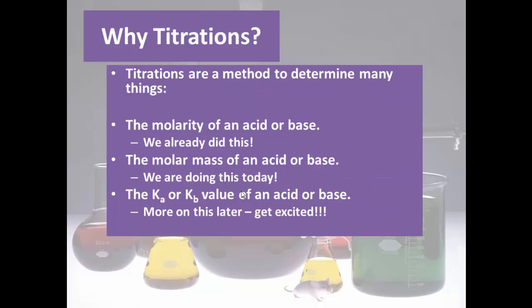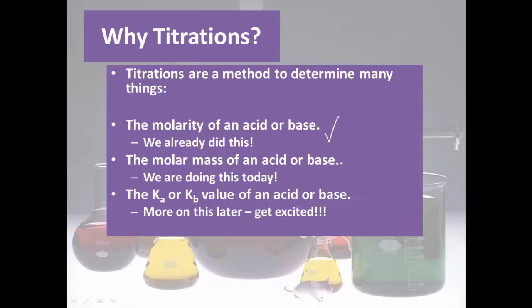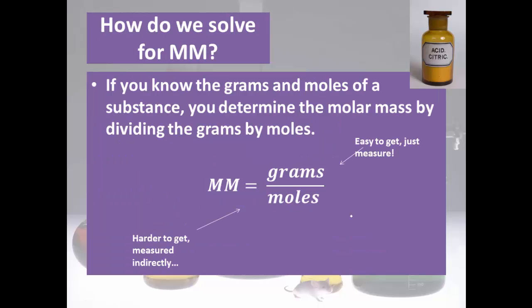As a review of what we do titrations for: first, we can figure out the molarity of an acid or a base if we know the molarity of another acid or base. The second thing we can do — and this is what we'll accomplish today — is figure out the molar mass of an acid or base. We can also use titrations to calculate Ka or Kb, but we'll hold off on that.